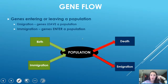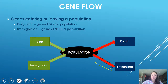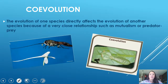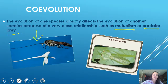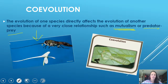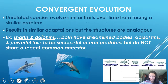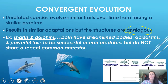Gene flow refers to the general movement in any population — there are births and deaths, immigration (entering), and emigration (exiting). Co-evolution is where one species is directly affected by the evolution of another. It's very common in mutualistic or predator-prey relationships. For example, as a flower evolves to be longer over time, the insect will evolve a longer antenna to reach the pollen.